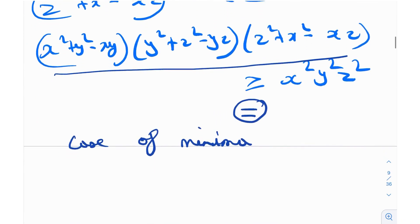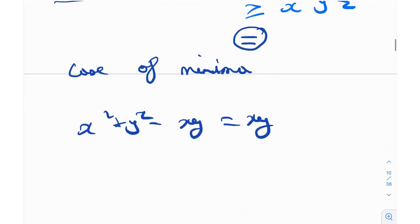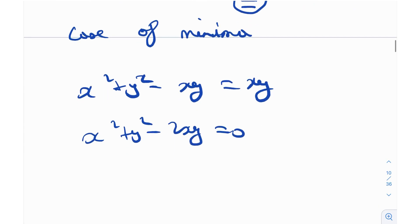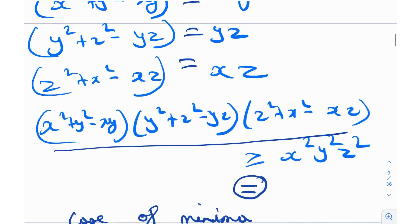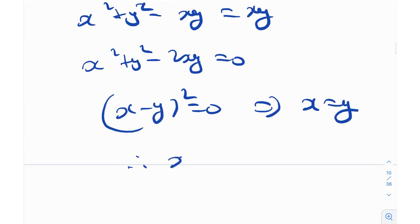What does that mean? So basically, what is happening is x squared plus y squared minus xy is equal to xy. In other words, x squared plus y squared minus 2xy is equal to 0. So x minus y whole squared is equal to 0, which implies x equals y. Similarly, because from here you got x equals y, from here you will get y equals z, and from here you will get x equals z. Therefore, we have x equals y equals z.